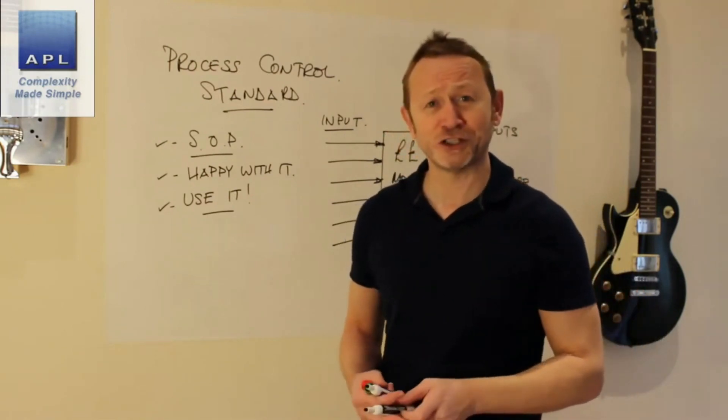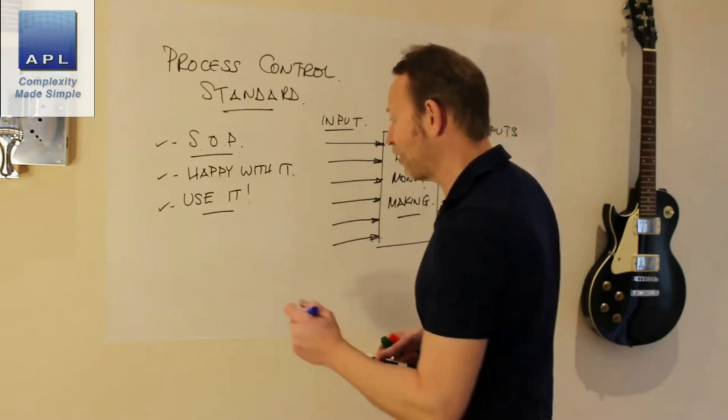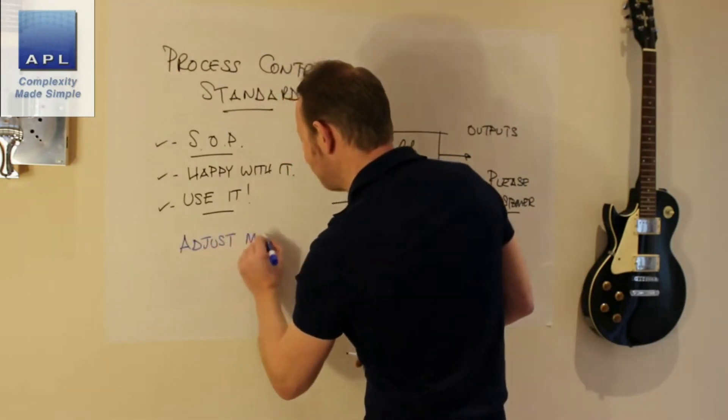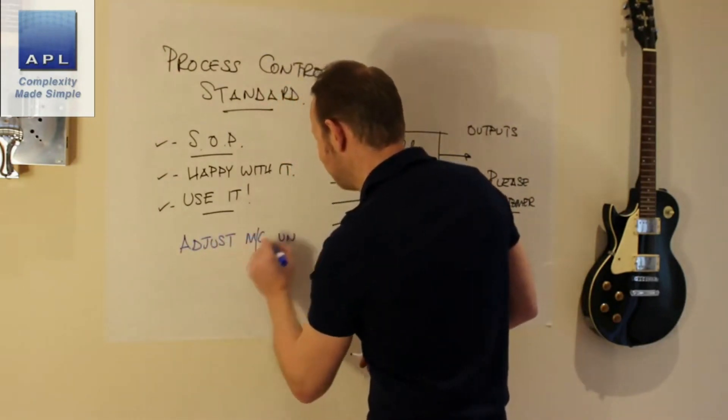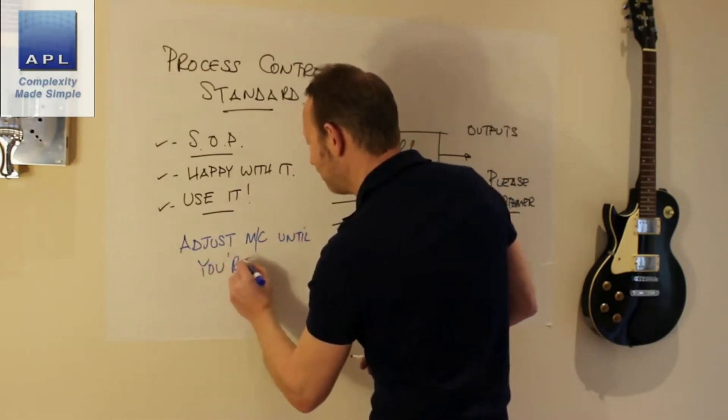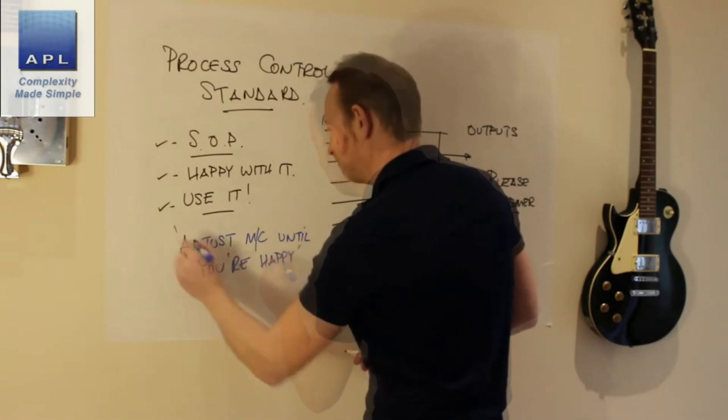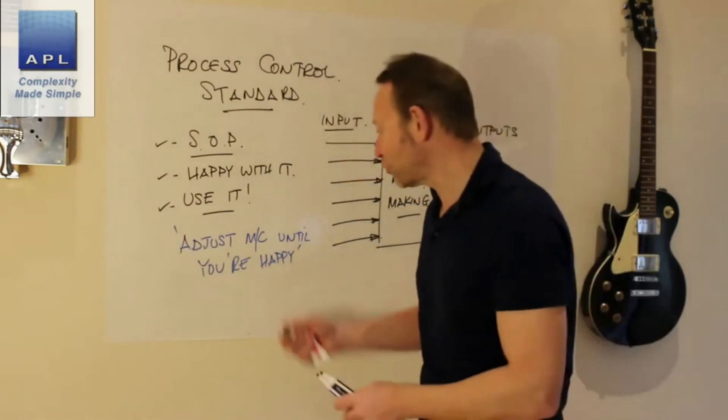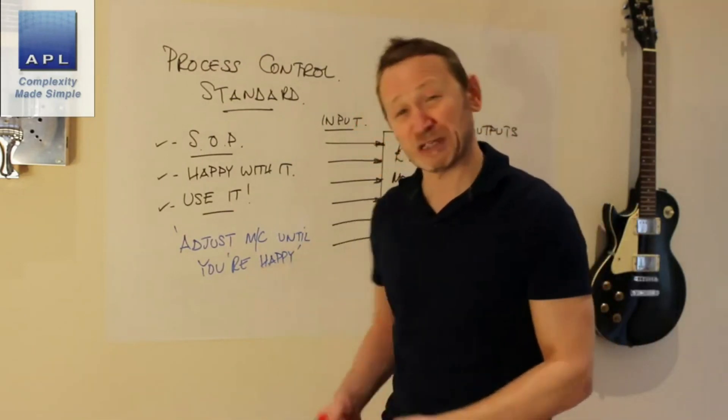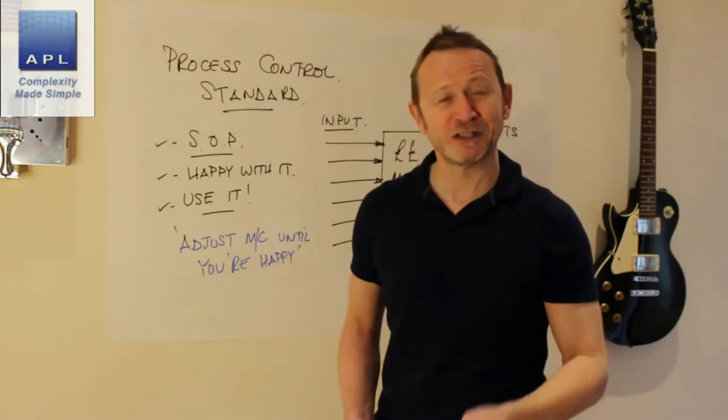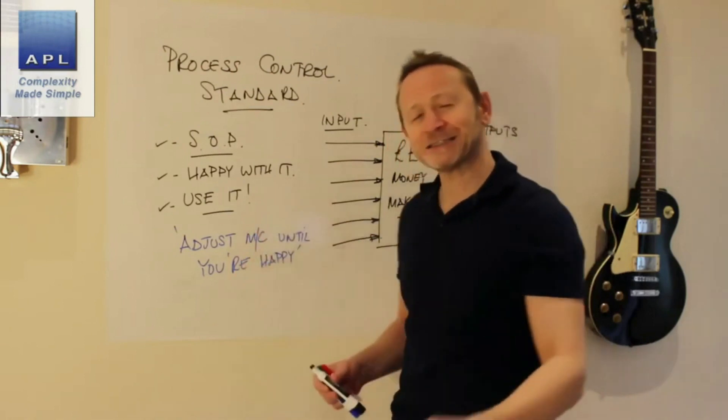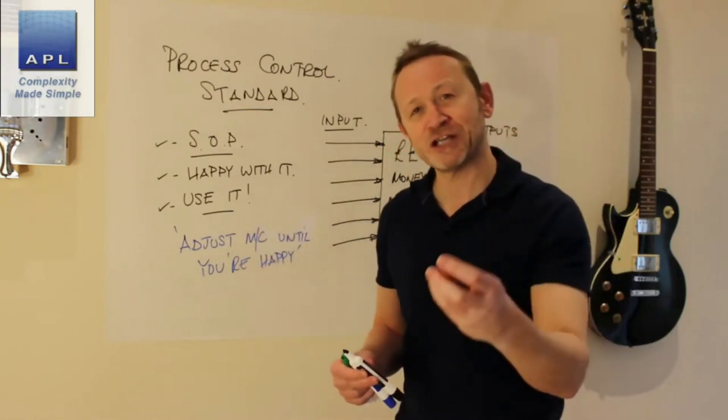Things to avoid: what I want you to avoid are things like adjust the machine until you're happy. I've seen standards like that. What's that saying? It's basically saying we haven't got a clue. Play about with the machine until something good happens. It's no standard at all. So we want to get standards which are clear and unambiguous.